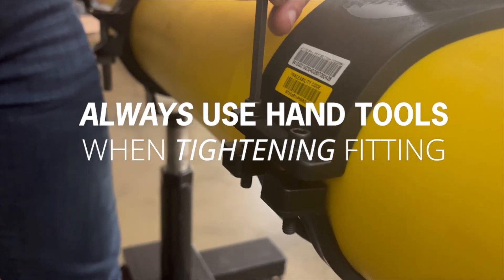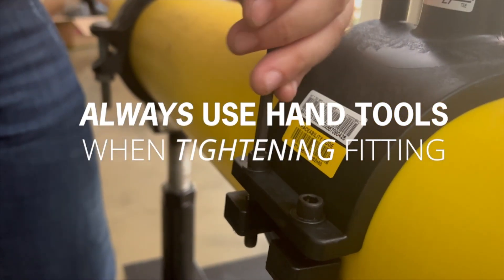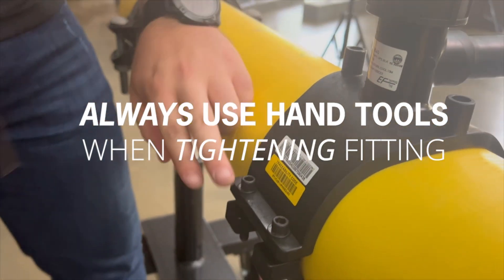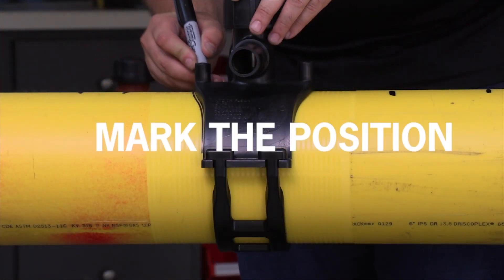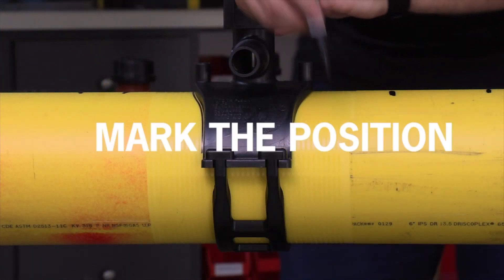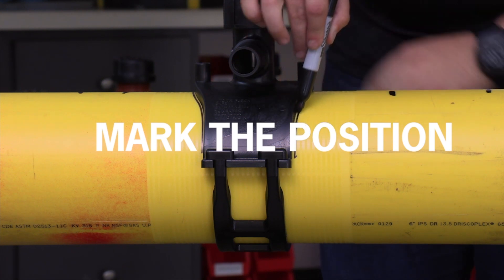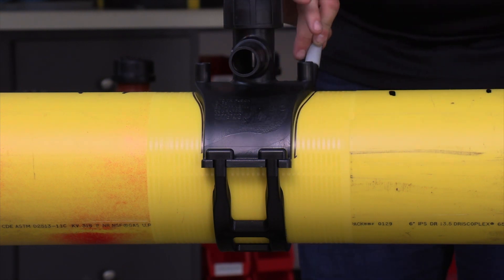Always use hand tools for tightening, never electric or air tools. After the tee is tightened on the main, make another set of witness marks along the base of the saddle. These marks will give a visual indication that the tee isn't moving out of position during the fusion process.